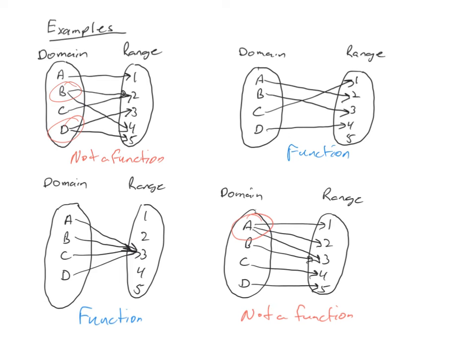Moving forward, you need to look at the different ways to represent a function and determine if what you're looking at is a function. The ways you'll need to look at are: a set of ordered pairs, an equation to determine if it represents a function, and a graph.